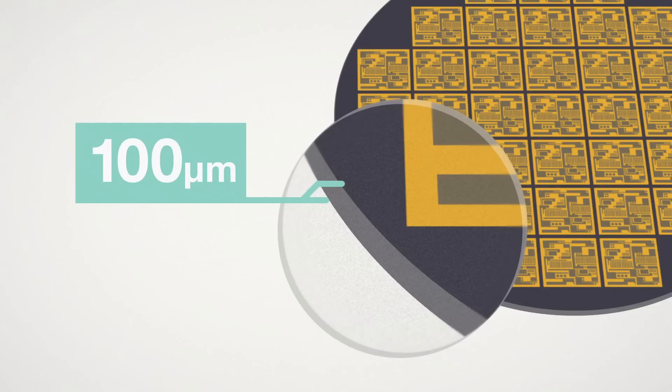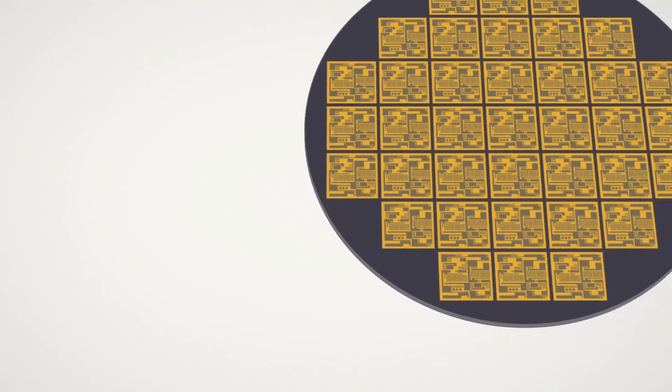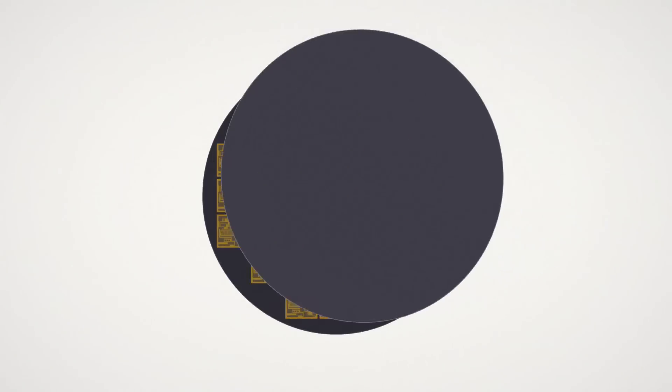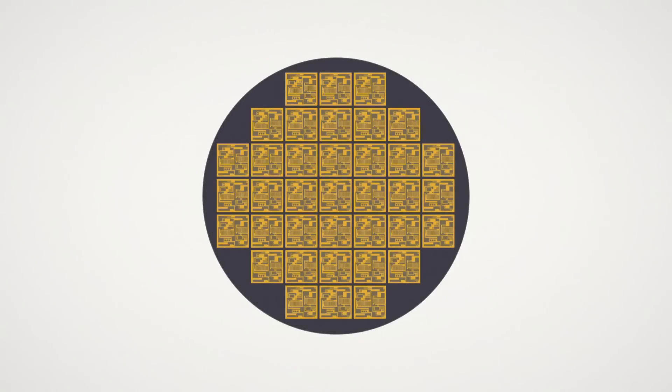They must be temporarily bonded to a rigid support called a carrier in order to survive the harsh process steps that follow. This temporary bonding allows manufacturers to process thin wafers as though they were standard full-thickness wafers. Once processing is complete, the wafer is released from the carrier and the ultra-thin chips can be packaged.